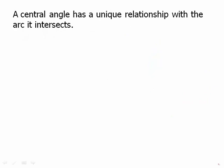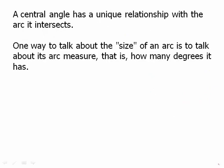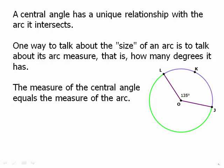A central angle has a unique relationship with the arc it intersects. One way to talk about the size of an arc is to talk about its arc measure — that is, how many degrees it has. The measure of a central angle equals the measure of the arc. For example, here we have an arc that goes from J to K to L, and because the angle equals 135 degrees, that automatically means the arc from J to K to L is also a 135-degree arc.